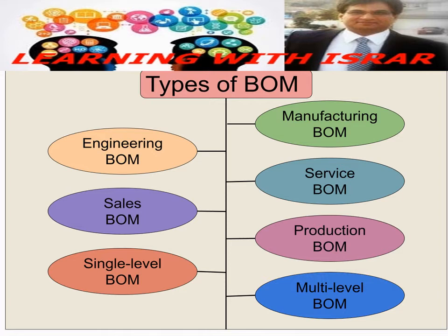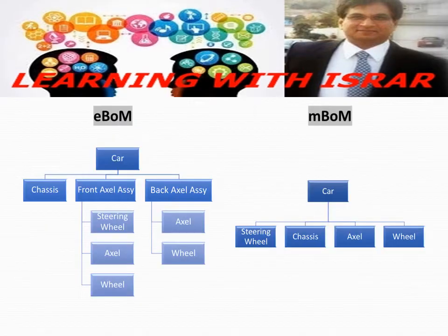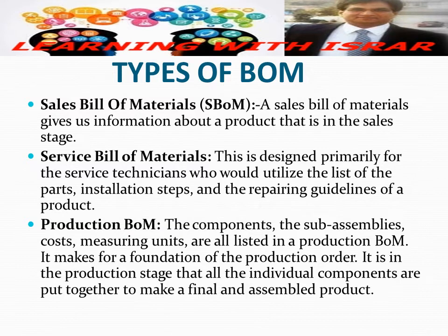The major types of Bill of Materials are engineering Bill of Material and manufacturing Bill of Material. Others include sales, service, production, single level, and multiple level. The engineering Bill of Material is created during the design phase of a product and provides a complete list of components and parts as designed by the engineering team. The manufacturing Bill of Material is the actual list of components required to produce the finished product, along with the quantities needed after design is complete.